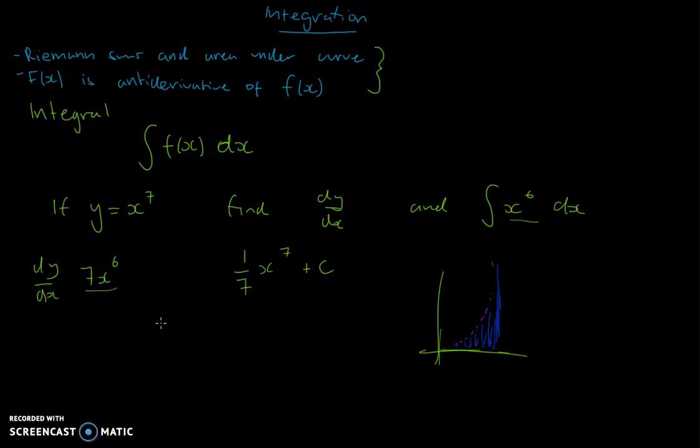But if we were to take the derivative of 1/7, so d/dx of 1/7 x to the power of 7, we know that that's x to the power of 6. We've done that just now. But if we were to take d/dx of 1/7 x to the power of 7 plus 50...